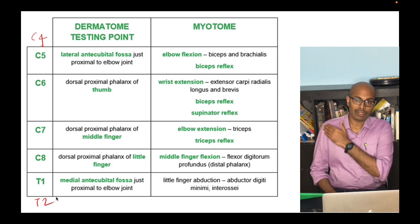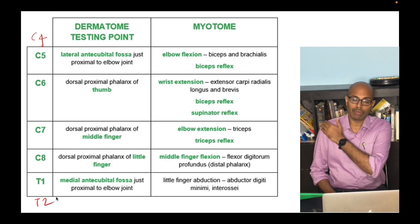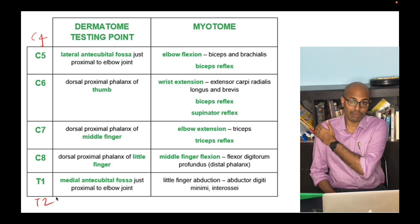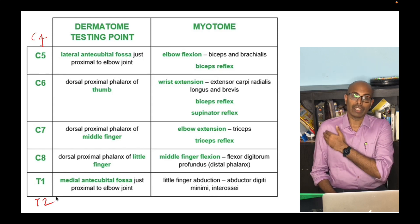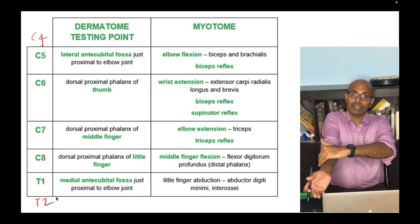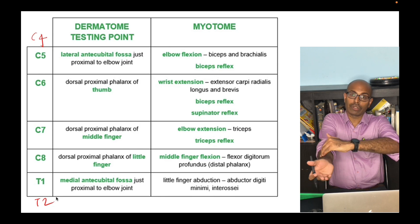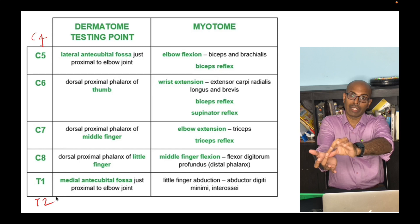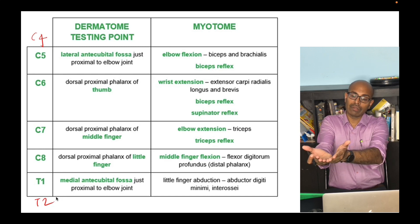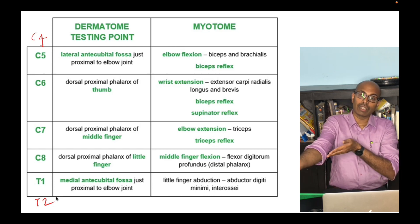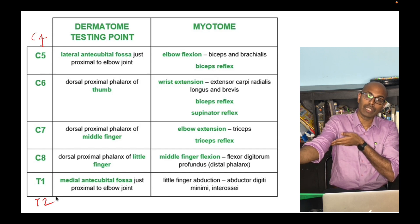The dermatomal distribution is very easy to remember. It starts from the lateral portion of the shoulder — the 'regimental patch' area — supplied by the axillary nerve, and the dermatome here is C5. As you go down the lateral portion, C6 supplies the lateral forearm and the thumb. C7 supplies the middle finger, C8 supplies the little finger and the medial forearm, and T1 supplies the medial portion of the arm.